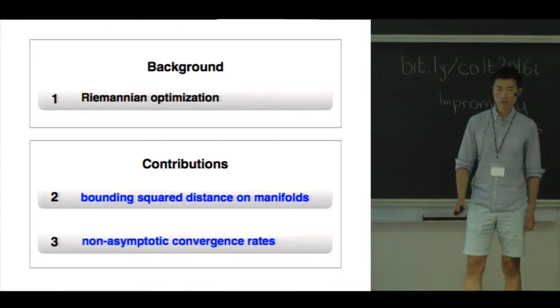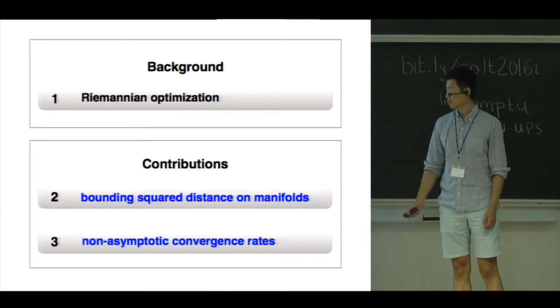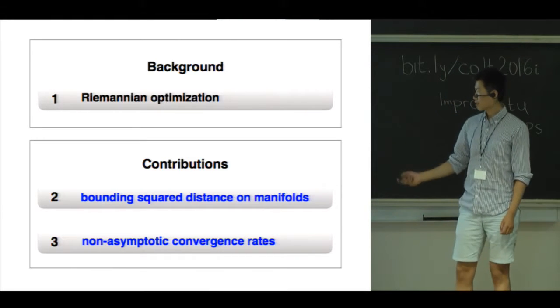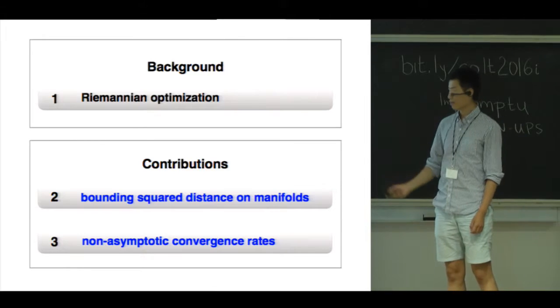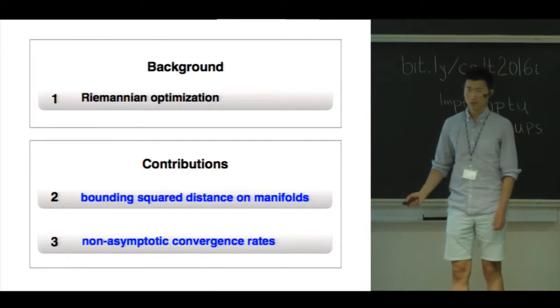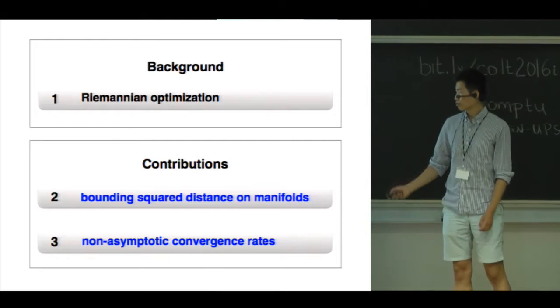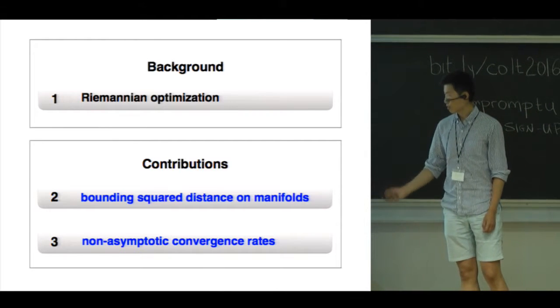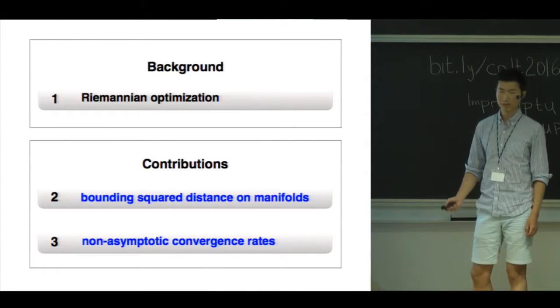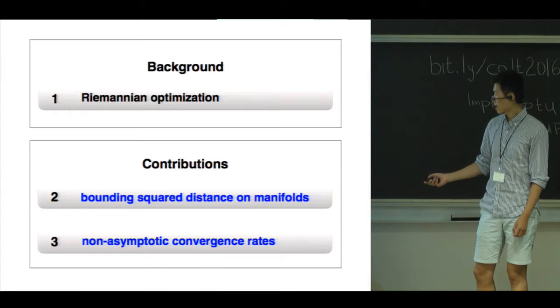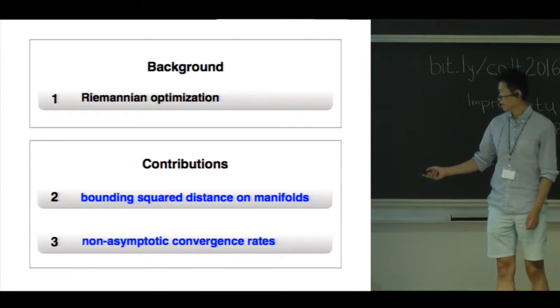We make two main contributions in this work. First, we establish a square distance bound on Riemannian manifolds which generalizes the Euclidean law of cosines. Then we use this lemma to prove the non-asymptotic convergence rate results for first order Riemannian optimization algorithms.